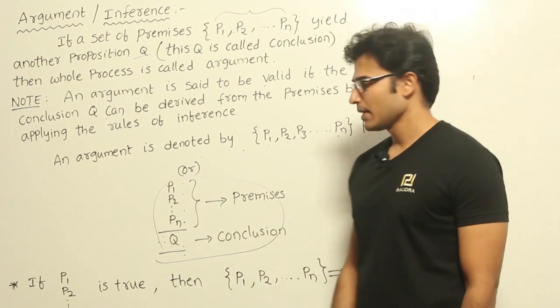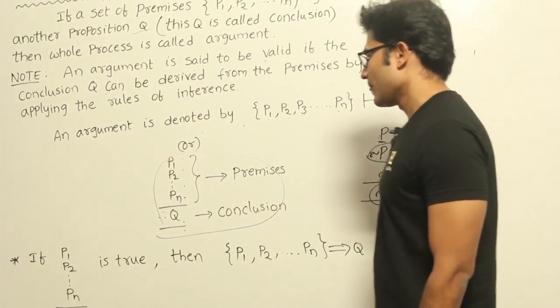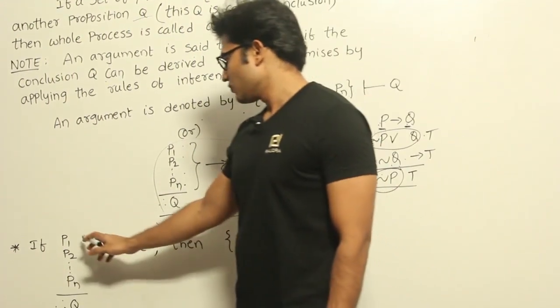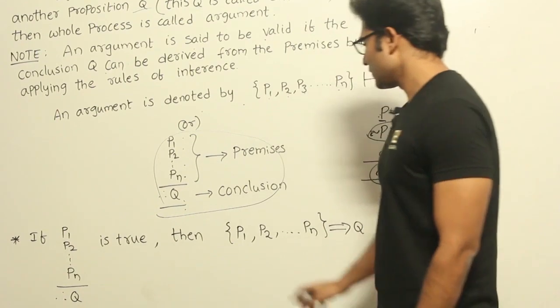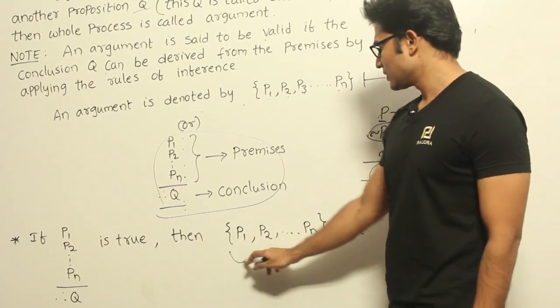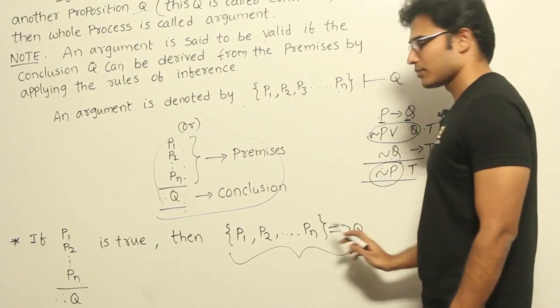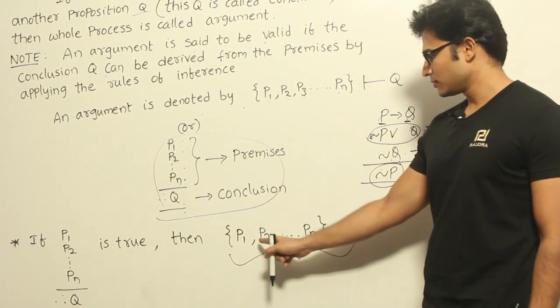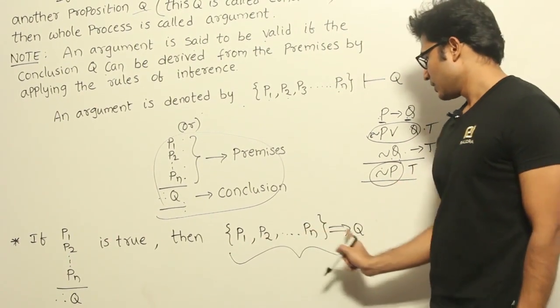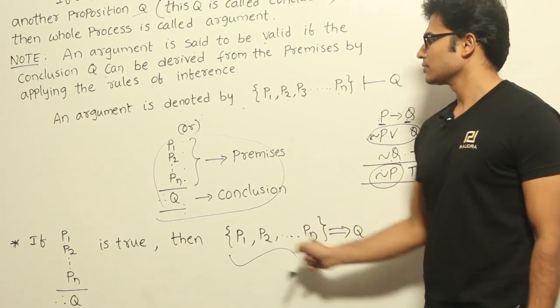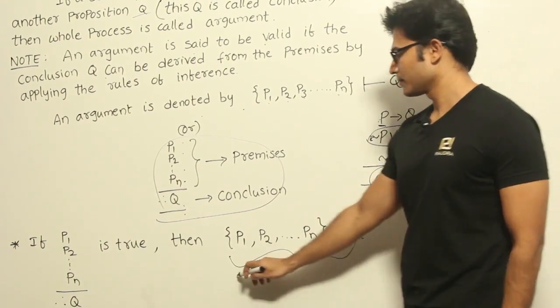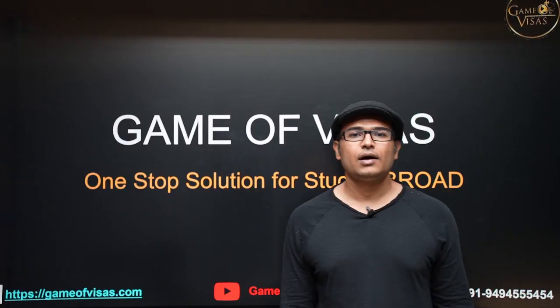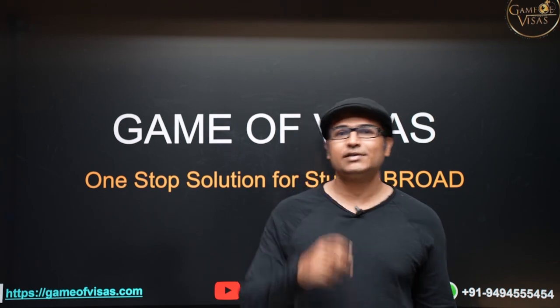If this argument is true, we can also write it this way — by this notation we can say that the conclusion is derived from the premises.